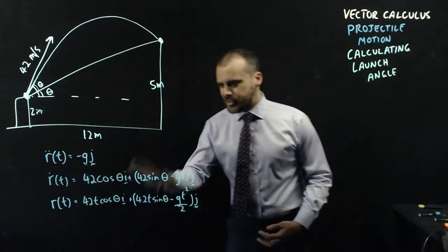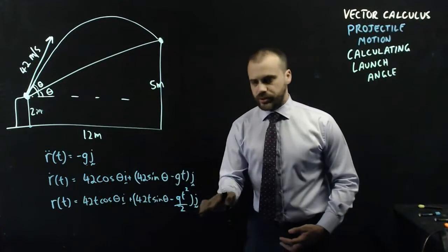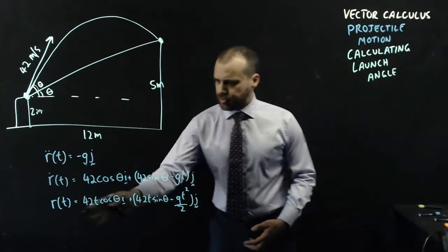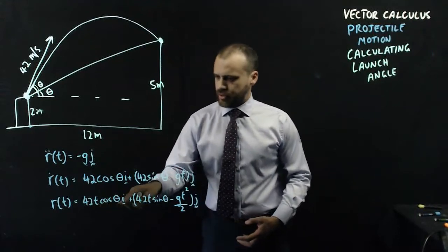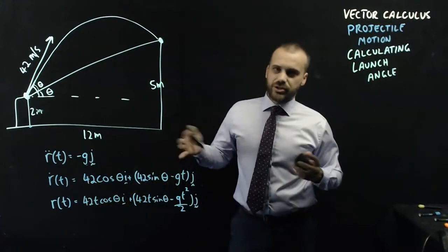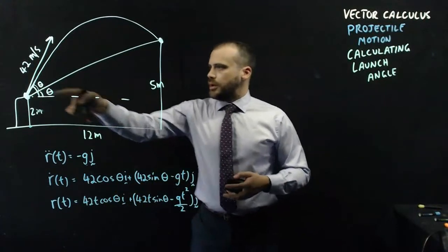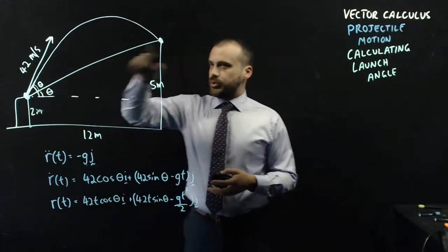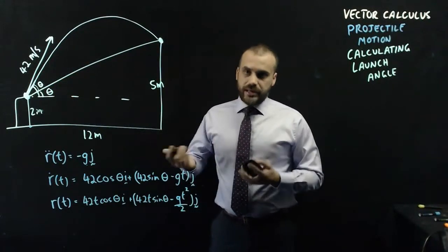So I have my displacement function here, and this is really what's important. But this displacement function has a t value and a theta value there, so it kind of has two unknowns. Now, I've got this quadratic or this quadratic. Both of them are going to be my answers at some point.